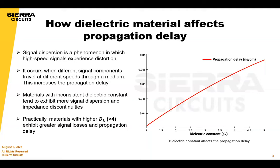Picking the right substrate becomes really important. Materials with inconsistent dielectric constants tend to exhibit more signal dispersion and impedance discontinuities. Higher Dk values — and we're saying as a team greater than four based on data — exhibit greater signal losses, which can negatively impact the overall performance of your system.